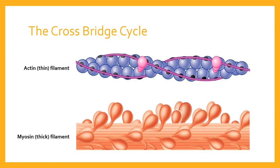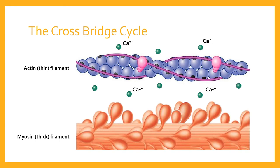Those conditions are that tropomyosin, which covers the binding sites, can only be moved if troponin — which are proteins — pulls it off those binding sites. That only happens if the troponin changes shape. The thing that causes troponin to change shape is when calcium ions flood into the sarcoplasm. Those calcium ions bind with troponin and change its shape, pulling the tropomyosin off those binding sites.